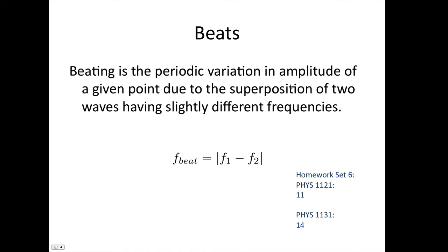Beating is the periodic variation in amplitude at a given point due to the superposition of two waves having slightly different frequencies. The beat frequency is given by the difference in these frequencies. We've got the absolute value signs because it doesn't matter which one we label as f₁ and which as f₂.